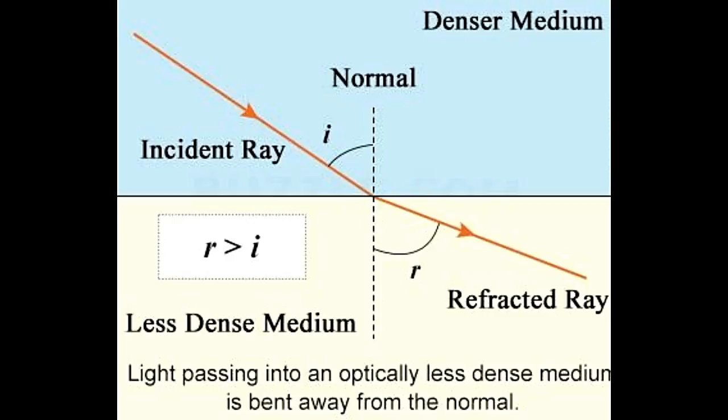If the refractive index of one medium is known, the other one can be deduced from Snell's law, if the angles of incidence I and refraction R are known. It's stated as, sin I divided by sin R equals N2 slash N1.